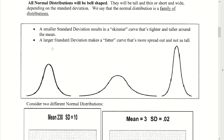Standard deviation is a measure of dispersion. The larger the standard deviation, the more spread out the data values are. Comparing three graphs: the most spread-out one has the largest standard deviation, the middle one has a moderate standard deviation, and the one that is very sharp and spiky — indicating all values are close to the mean — has the smallest standard deviation.